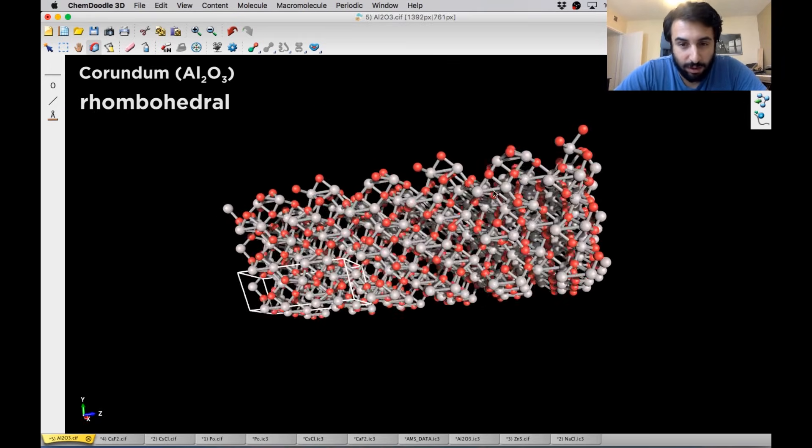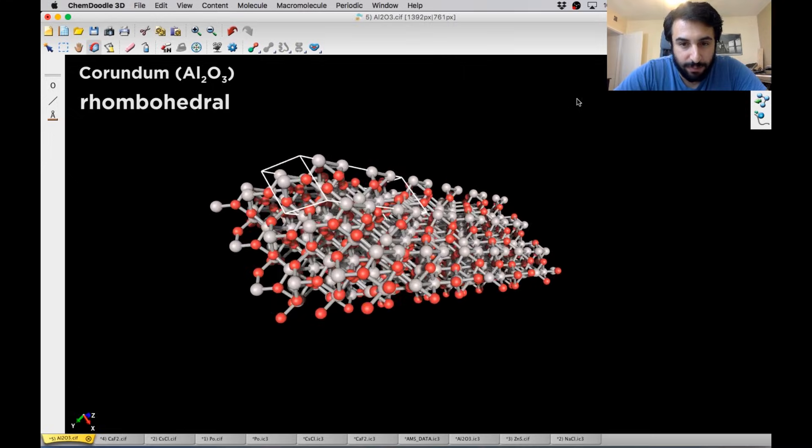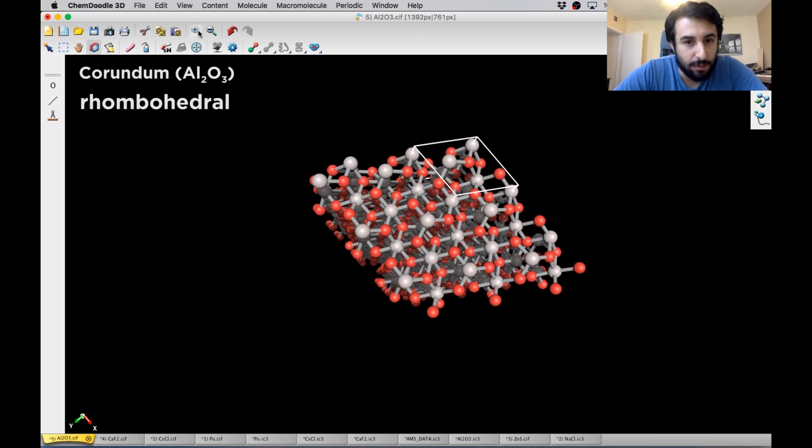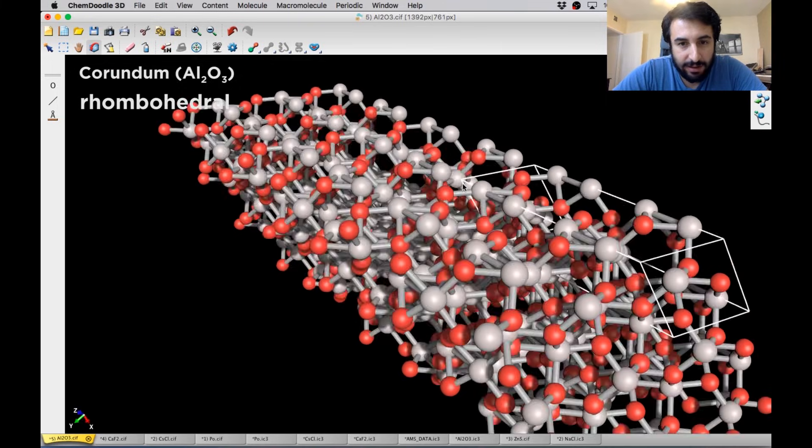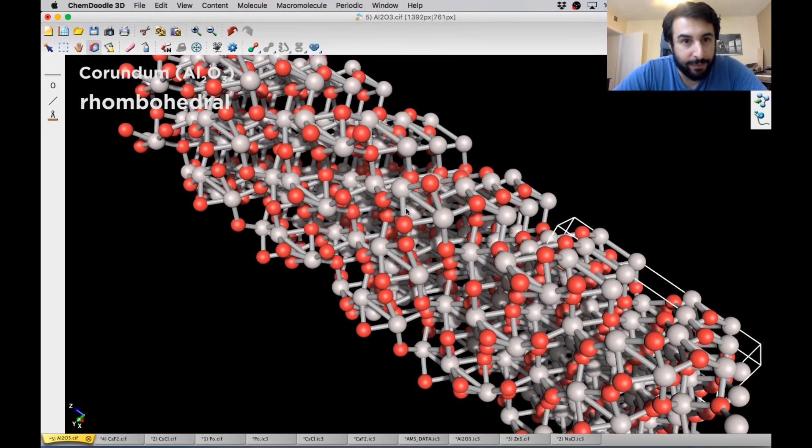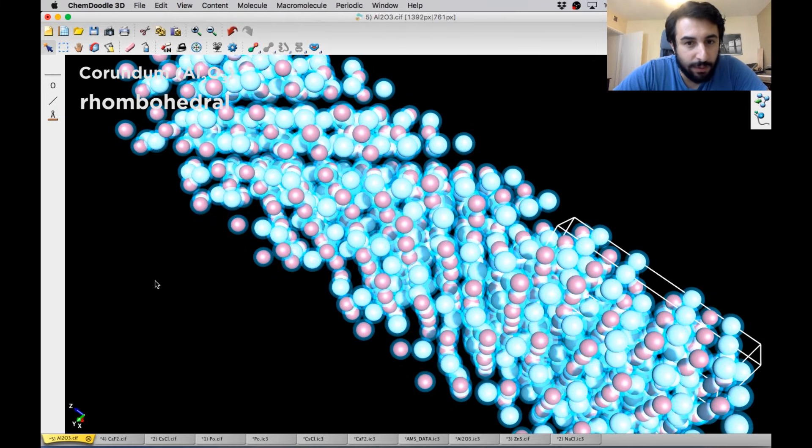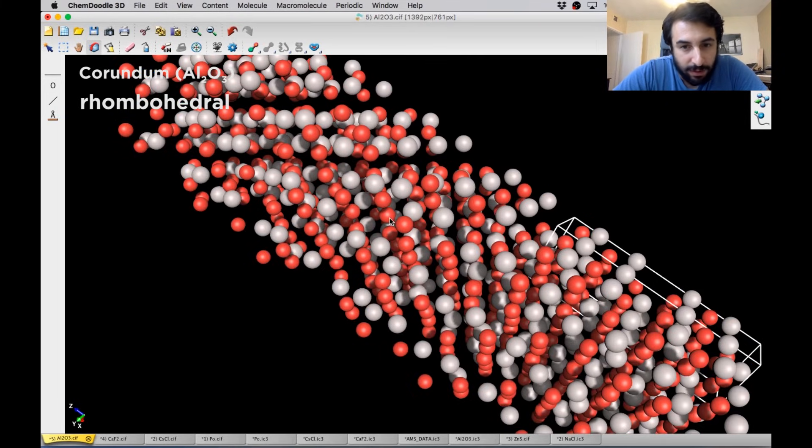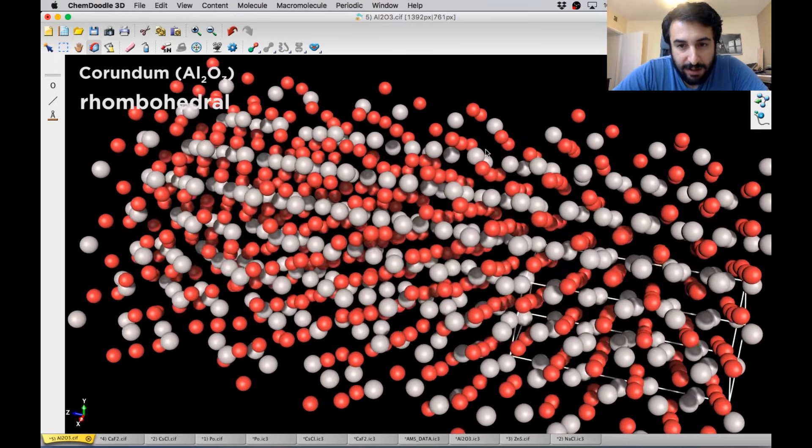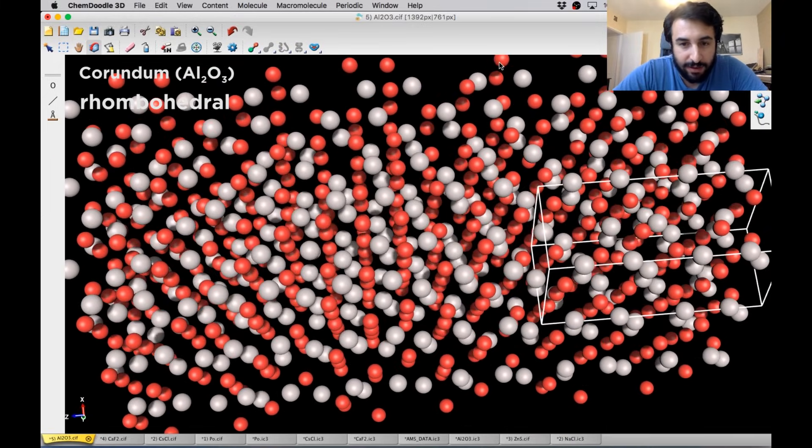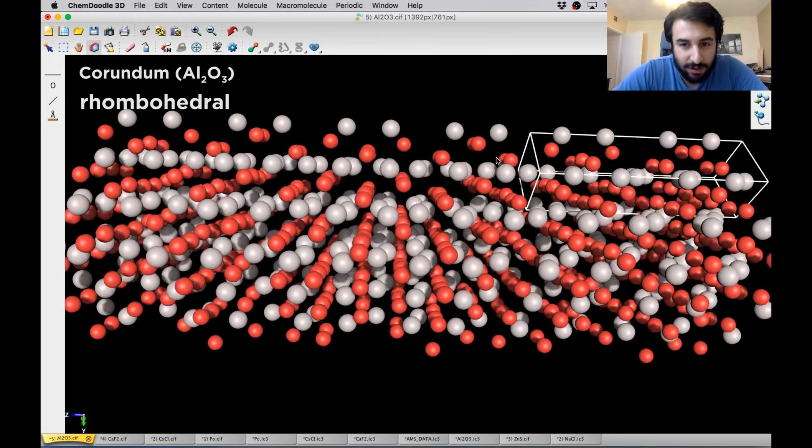We've built the unit cell out quite a bit. And we can look at this from a few different vantage points. We can zoom in if we like and really get a good look at this thing. We can also, once again, get rid of those bonds if we want a little bit of a clearer picture of the orientation. And so that's just a little bit about these unit cells.